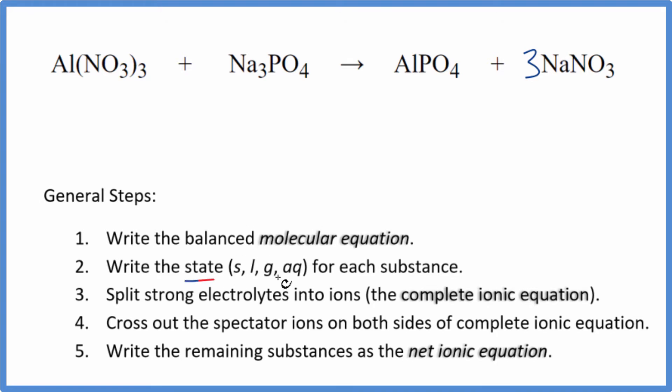Now we need to write the state for each substance. If you know your solubility rules, nitrates are very soluble. So we're going to write AQ, that's going to dissolve and dissociate into its ions. In general, phosphates are insoluble, they don't dissolve, except for group one elements like sodium or potassium. Those will dissolve, they'll be soluble.